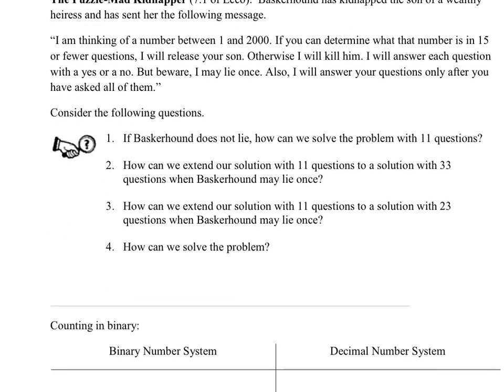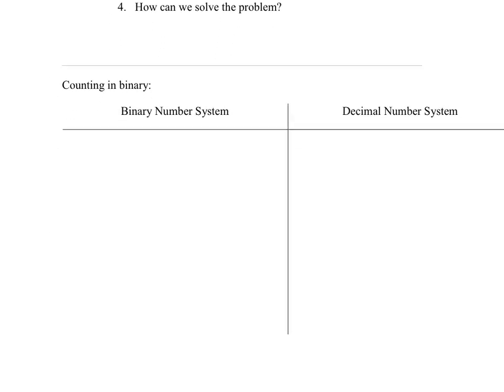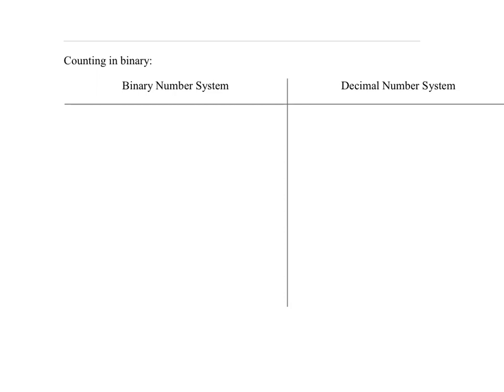From here, we're going to learn about binary numbers, because that's the first step in learning about the Hamming code. We're going to start by doing some counting in binary. In binary, there are only two symbols to use, zero and one, and then you run out of symbols. In the decimal number system, there are 10 symbols we can use: zero, one, two, three, four, five, and so on. Let's count up to five in binary.